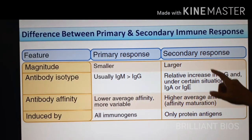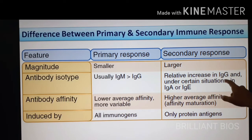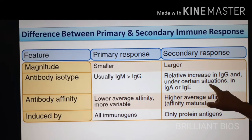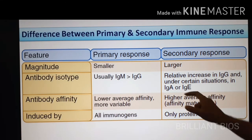In secondary immune response, there is a relative increase in IgG molecules. Under certain situations, depending on the pathogen or surrounding milieu — meaning surrounding cytokines produced by T-helper cells or other immune cells — it can produce IgA or IgE.